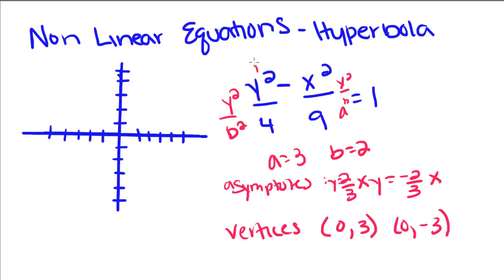Because these two switch order, so these two are going to switch order. So it's going to be (0,3) and (0,3). Because when we have y first, it switches our hyperbola from going like this to opening like this.